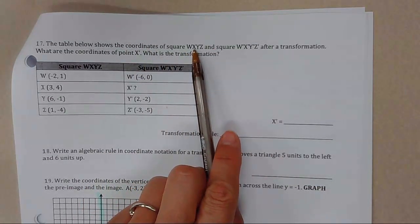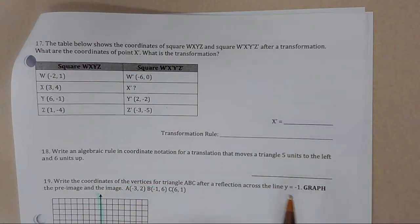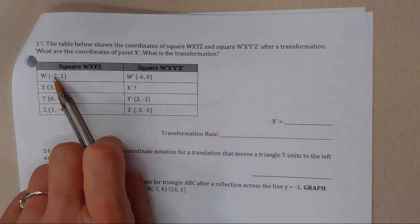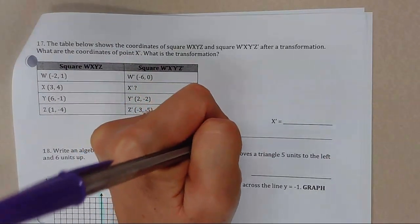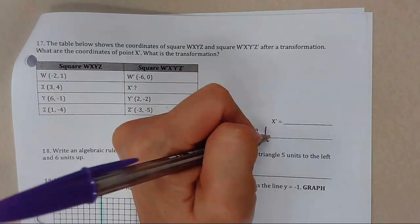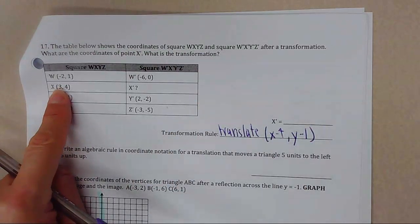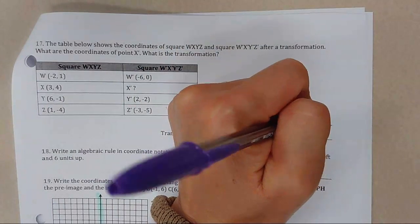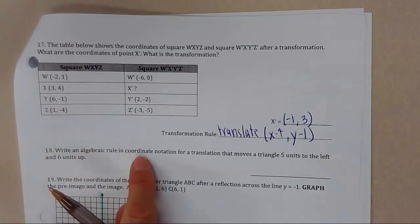The table shows coordinates of WXYZ and their image W'X'Y'Z' after a transformation. We notice that X is going down by 4 and down by 1 — so it's a translation: (x − 4, y − 1). For point X with coordinates (3, 4): 3 − 4 = −1 and 4 − 1 = 3, giving X' at (−1, 3).